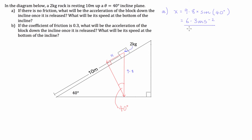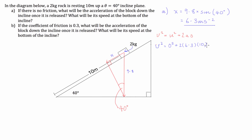Now the second part: what will be the speed at the bottom of the incline? The formula we're going to use here is the final velocity squared is equal to the initial velocity squared plus 2 times the acceleration times the distance. We're looking for v squared, so we have v squared is equal to u squared — it starts at rest, so it's going to be 0 squared — plus 2 times 6.3, and the distance is 10 meters. So that's 2 × 6.3 × 10 = 126.